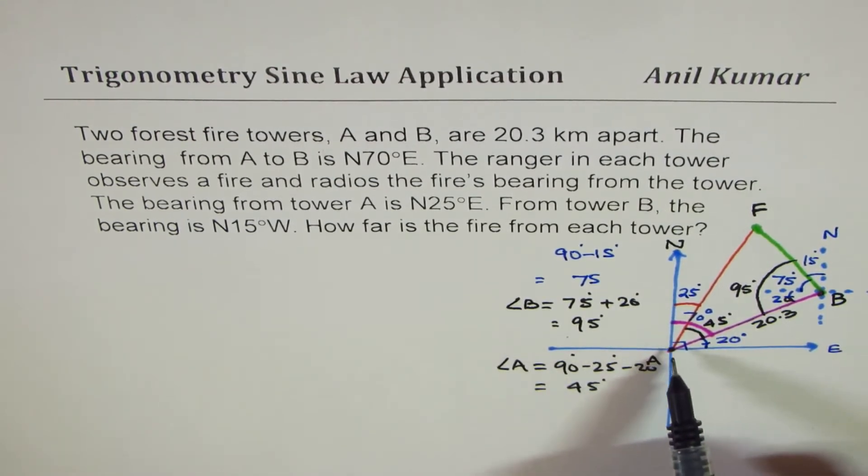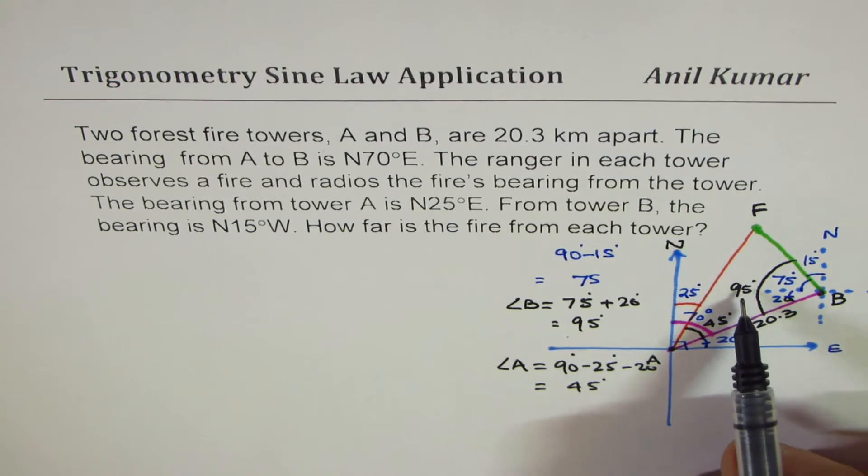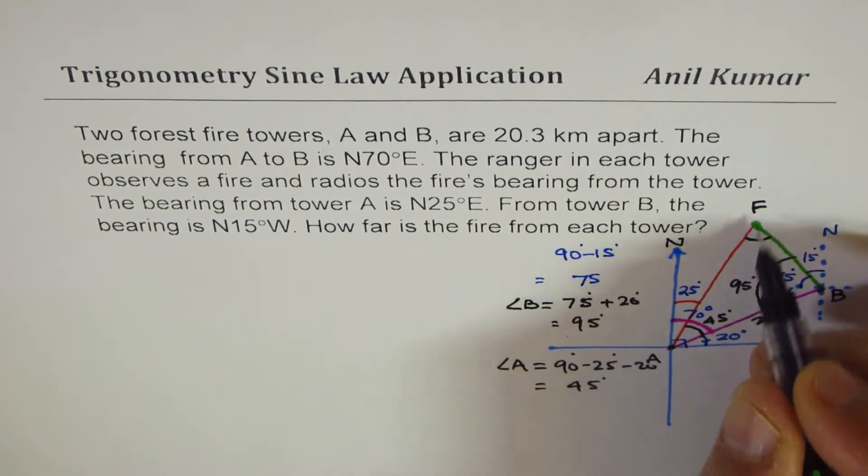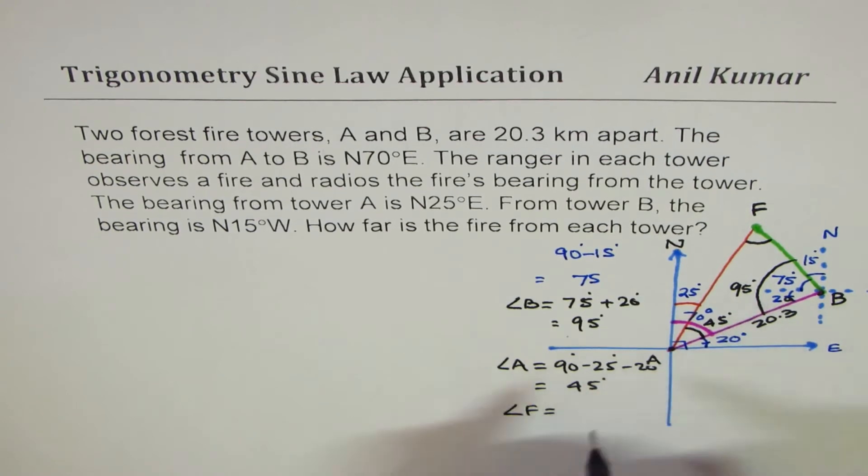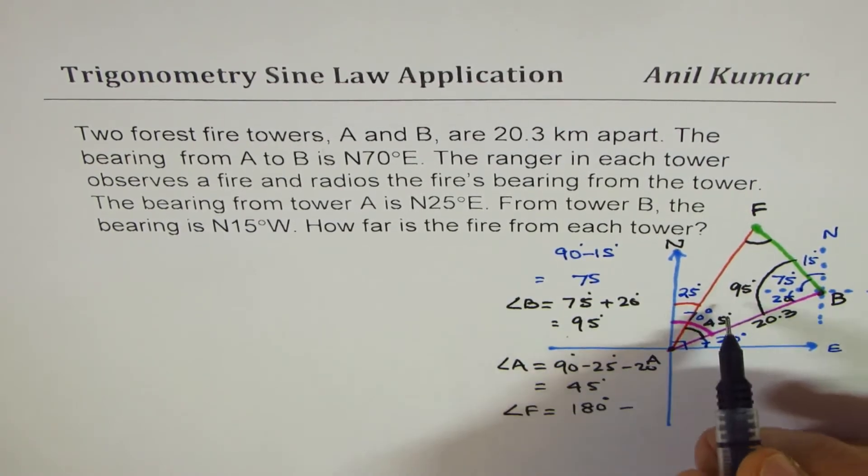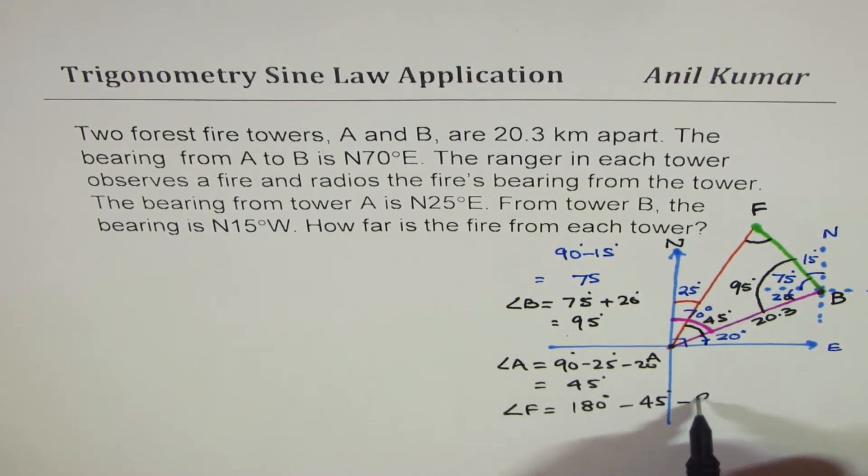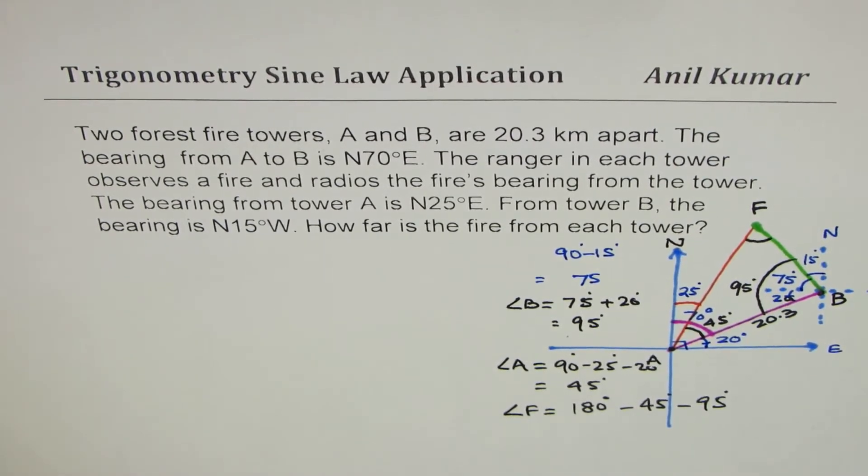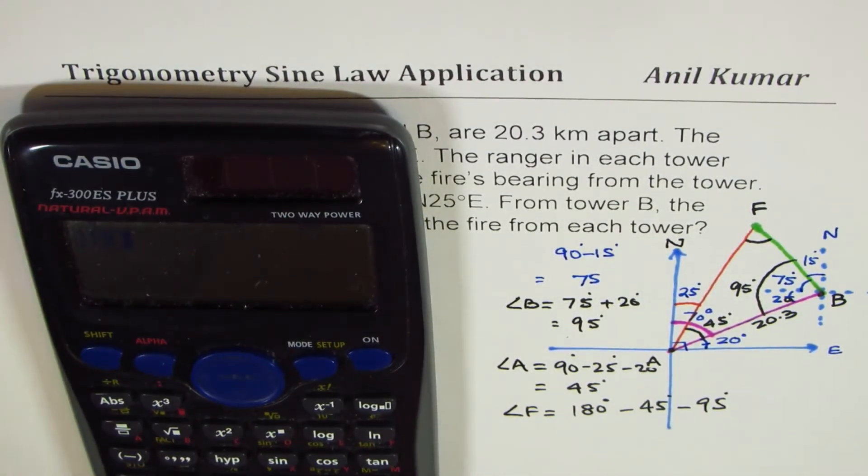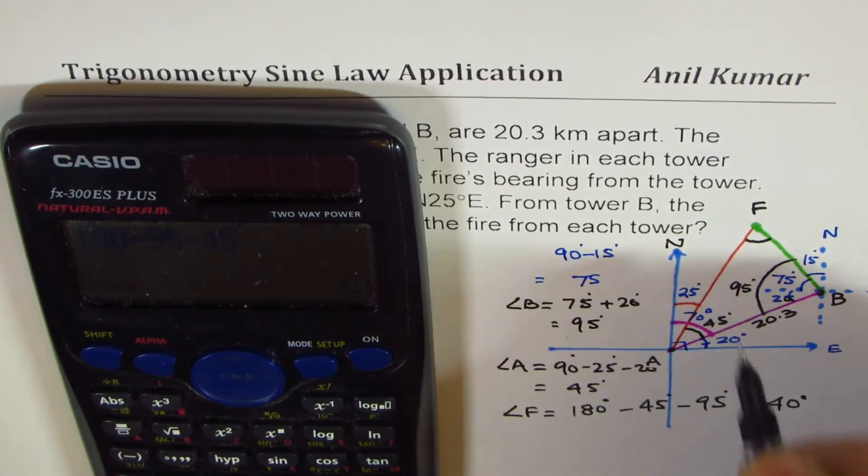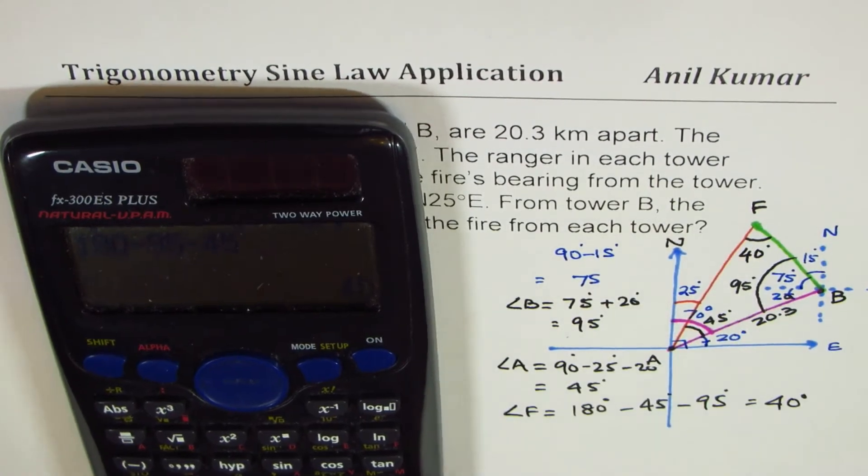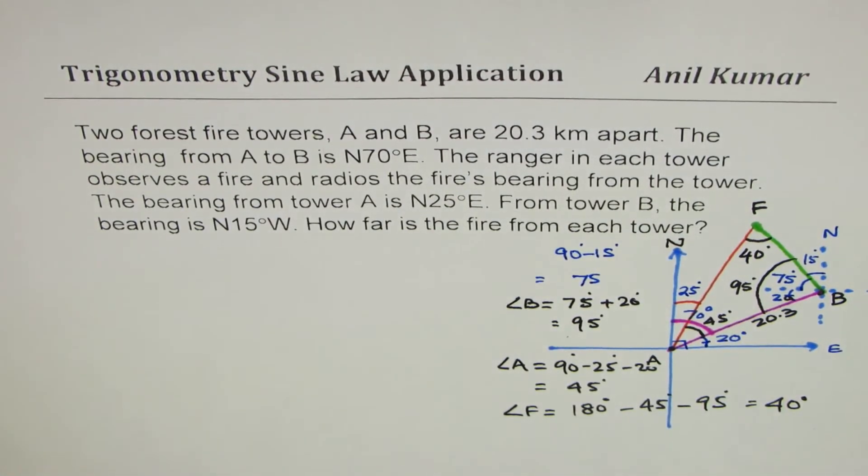Now, we know angle at A is 45 degrees, at B is 95 degrees. AB, the side is given to us. We can find the third angle. So the angle at F will be equal to, these two are known, 180 degrees, sum of angles, take away 45 degrees and take away 95 degrees. Let's use calculator. So it is 180, take away 95, take away 45. You are left with 40 degrees. So this angle is 40 degrees. So that is how we get all the angles. So I hope this part is very clear.